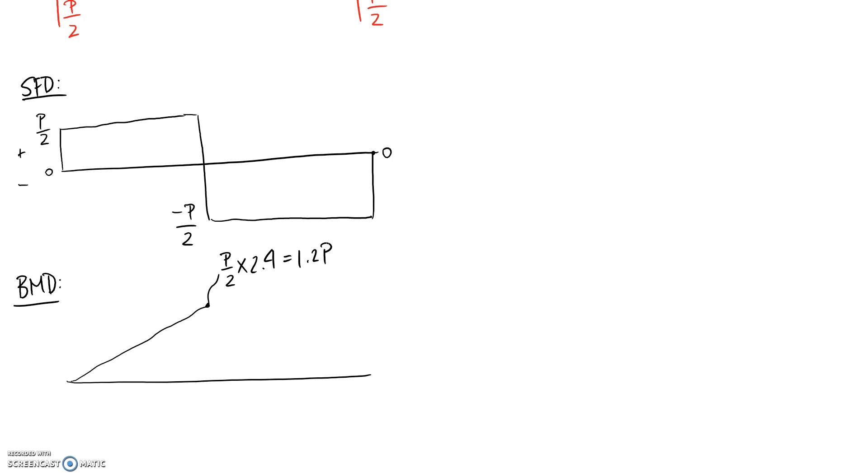Now to complete the diagram, what we're going to see is this is now on the negative side, so it's going to pull us back down. And because there's nothing else, it should pull us back down to zero. But you can check: it's going to be where we started, which was 1.2P, minus the area in here, which is P on 2 multiplied by this length. It was simply supported, the distance was the same on either side, so 2.4, which is equal to zero. So this is our complete bending moment diagram.